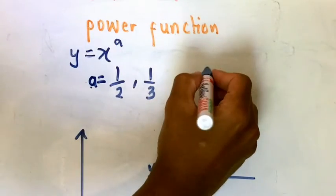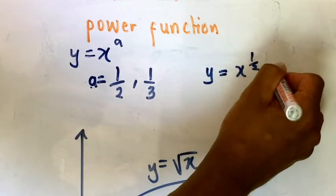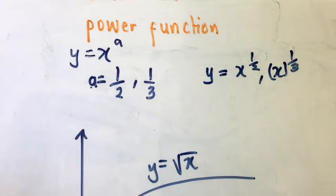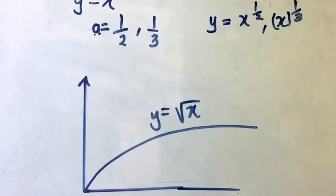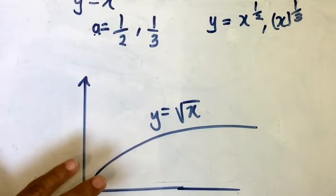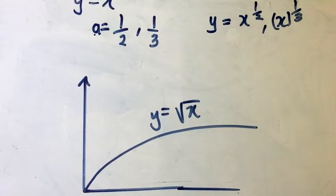We also have fractional powers: a equals one half or a equals one third. So y equals x to the power one half is the square root of x, and y equals x to the power one third is the cube root of x. For y equals the square root of x, the domain is the positive numbers only, because the square root of negative numbers is not defined.